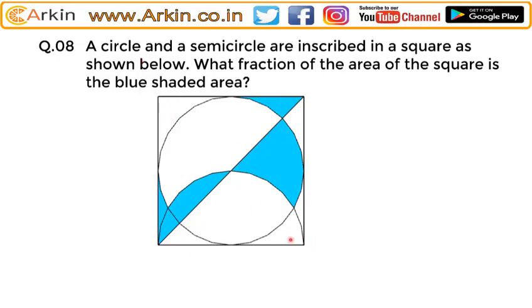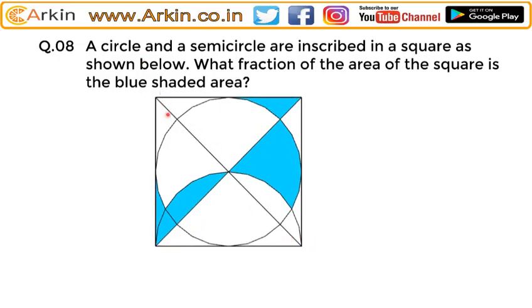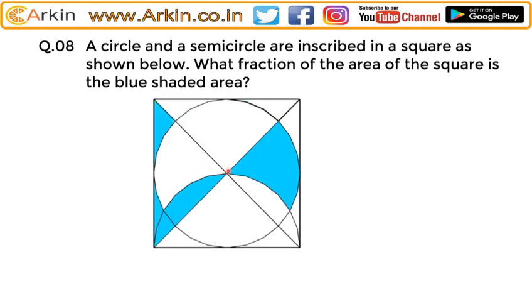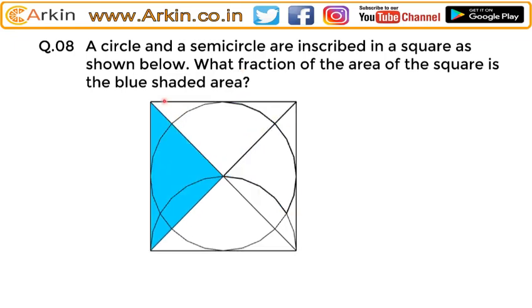If you shift this blue area to this side and this area to this side, you can clearly see that the blue shaded part is one fourth of the square. So the answer will be: the blue shaded area is one fourth, that is 0.25.